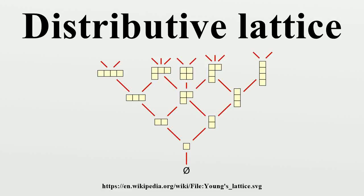In mathematics, a distributive lattice is a lattice in which the operations of join and meet distribute over each other. The prototypical examples of such structures are collections of sets for which the lattice operations can be given by set union and intersection. Indeed, these lattices of sets describe the scenery completely: every distributive lattice is, up to isomorphism, given as such a lattice of sets.